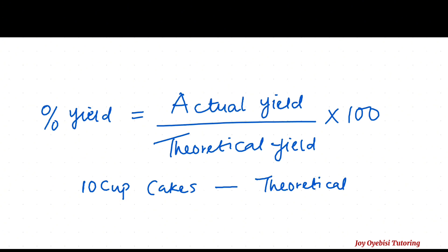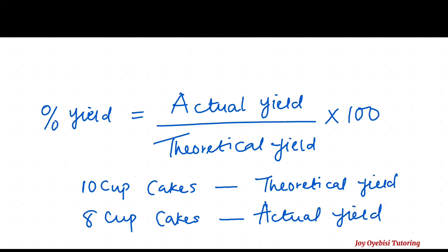That is your theoretical yield. So if you now go ahead and follow the recipe, mix the cake, and at the end of your baking you probably got about 8 cupcakes instead — this 8 cupcakes is going to be your actual yield, because you have done it and that is the actual number of cupcakes you got. To calculate your percent yield, your percent yield equals actual yield which is 8 over 10 times 100, and that gives us 80%. Now we're going to put this in a chemistry-related problem.